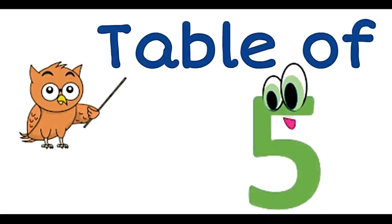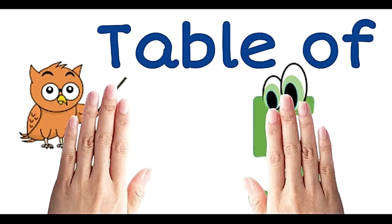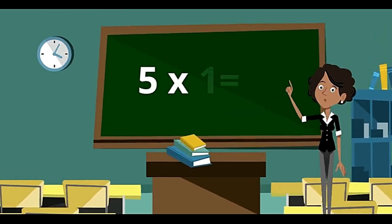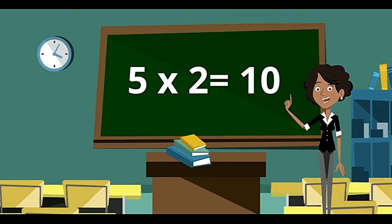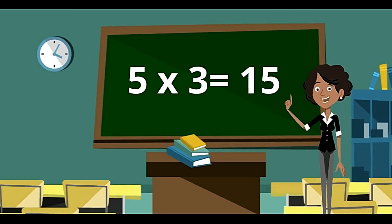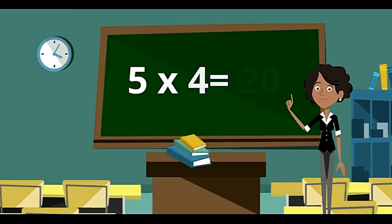Now table of 5, and it's very easy. 5 ones are 5. 5 twos are 10. 5 threes are 15. 5 fours are 20.